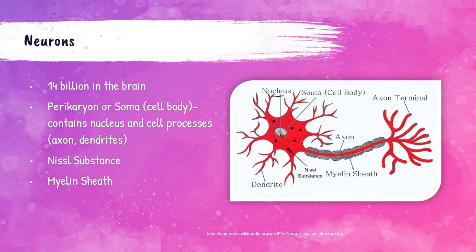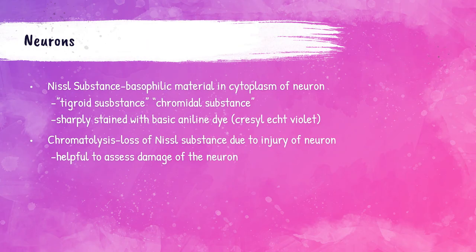The neuron also has the myelin sheath and the Nissl substance, which is within the soma. Nissl substance is also called tigroid substance or chromodial substance. It is a basophilic material within the cytoplasm of the neuron that stains sharply with basic aniline dye — an example is Cresyl Echt Violet. Chromatolysis is when the neuron is injured and the Nissl substance disappears; this phenomenon helps assess neuron damage in stained tissue.